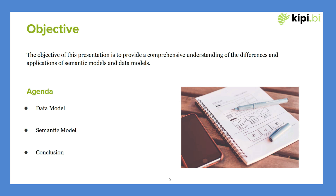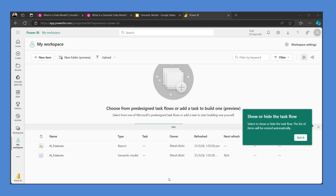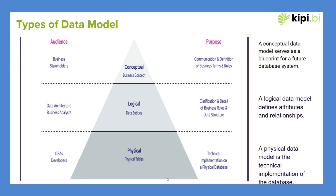Hi everyone, my name is Ritesh and you're watching Dancing with Data. Today our objective is to understand the difference between data model and semantic data model. If you're working with Power BI, you know that dataset is now called semantic model, and this semantic model concept is used with other tools like Tableau, Sigma, and so forth.